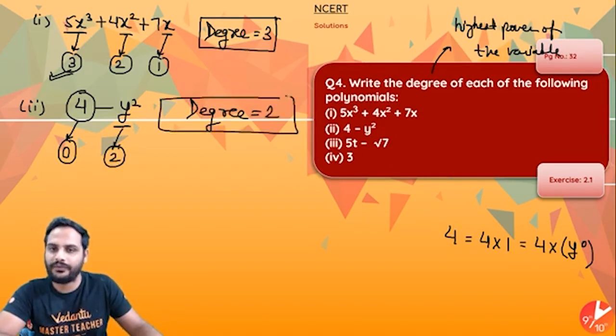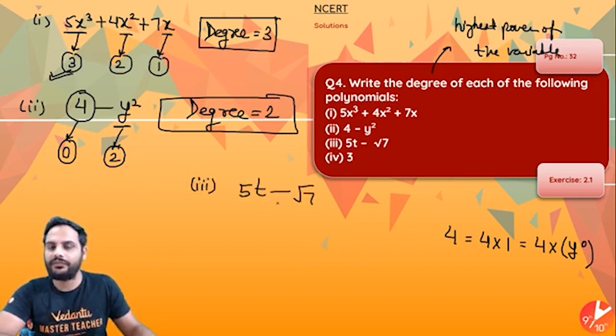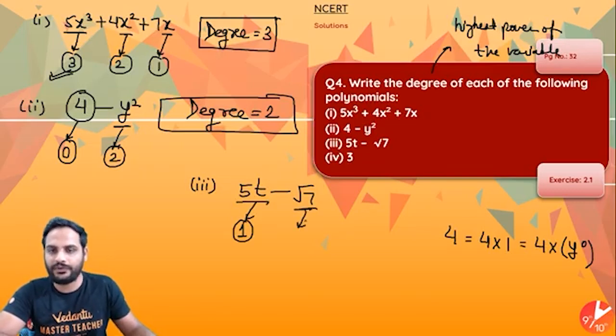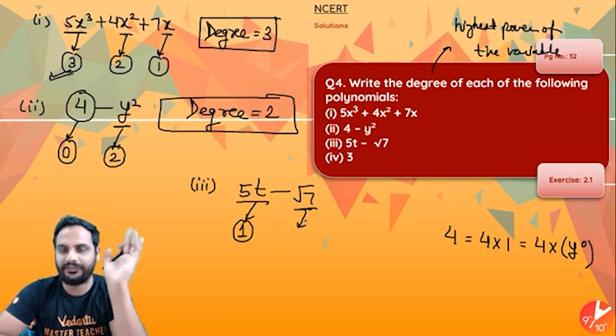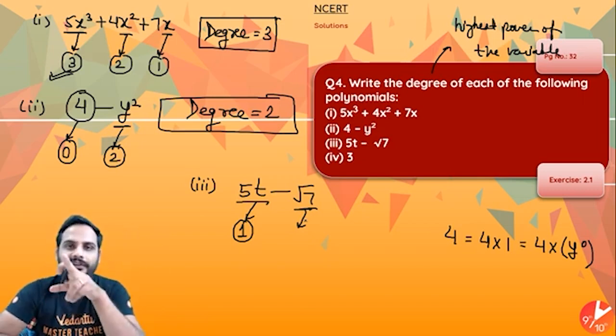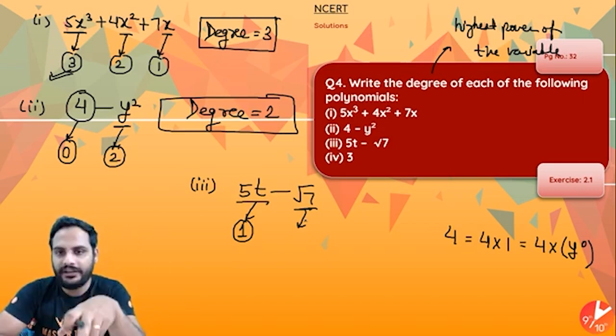First one degree 3 means cubic, second one degree 2 means quadratic. Then the third one: 5t - √7. Variable is t, so in the first term t power is 1. Now √7, many students make the mistake, they will say sir power is half here.